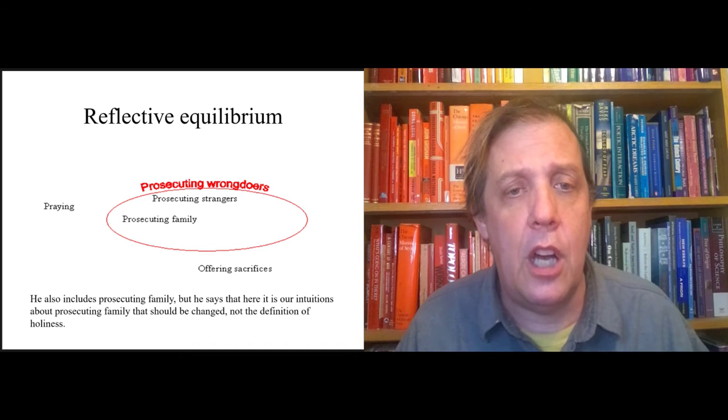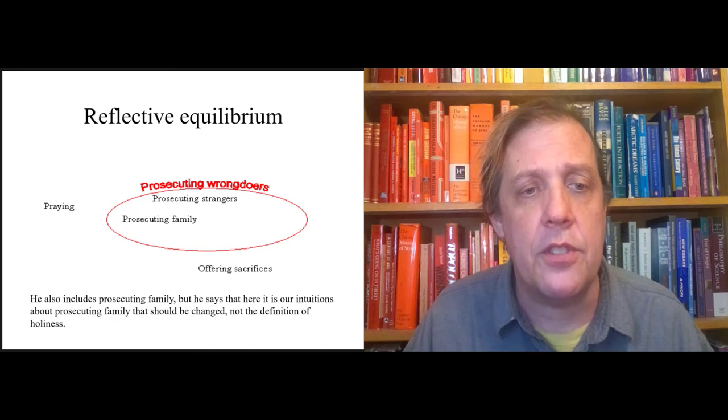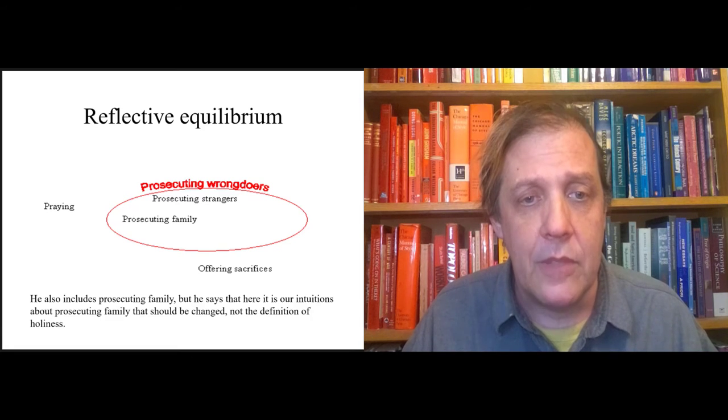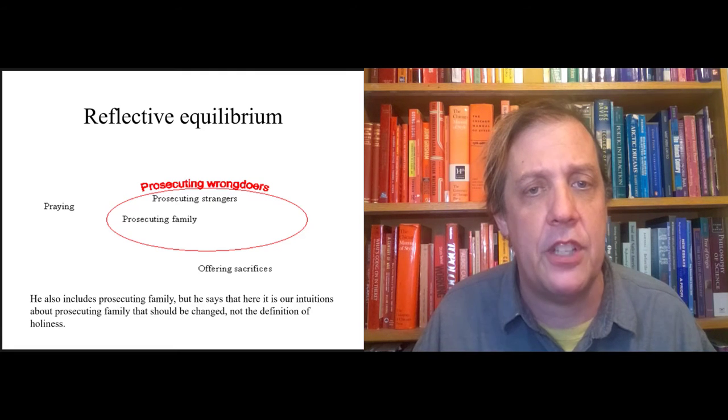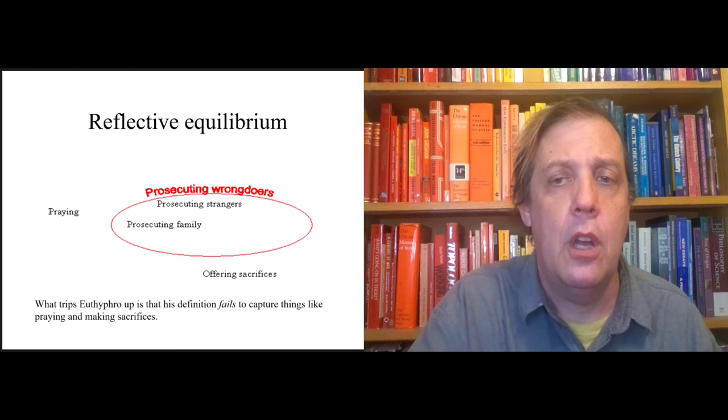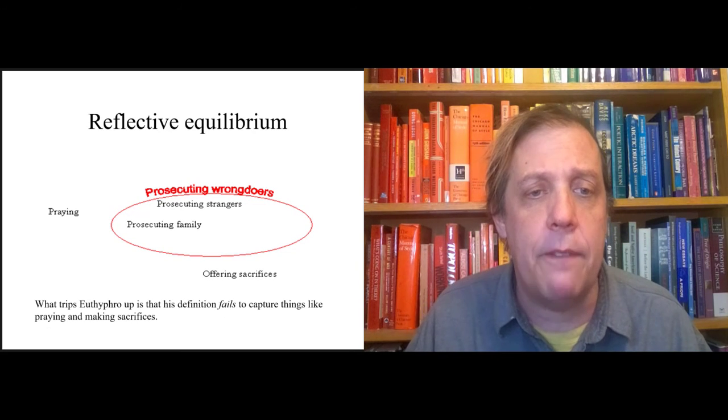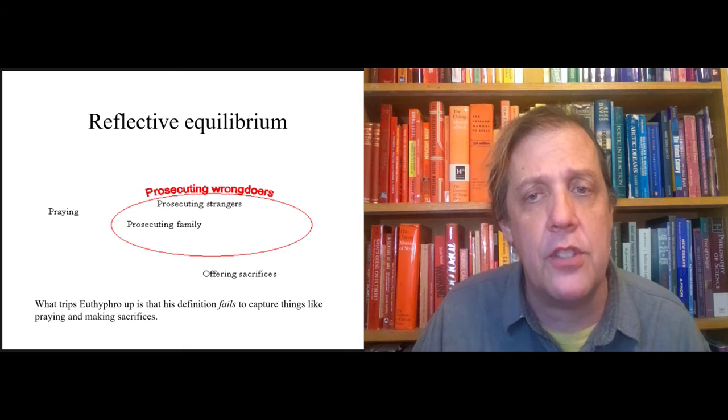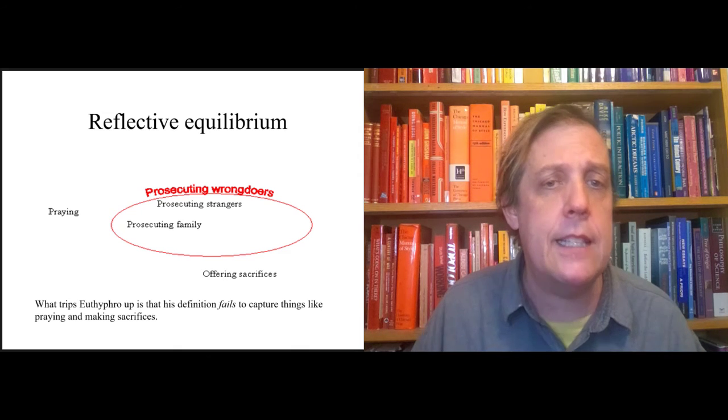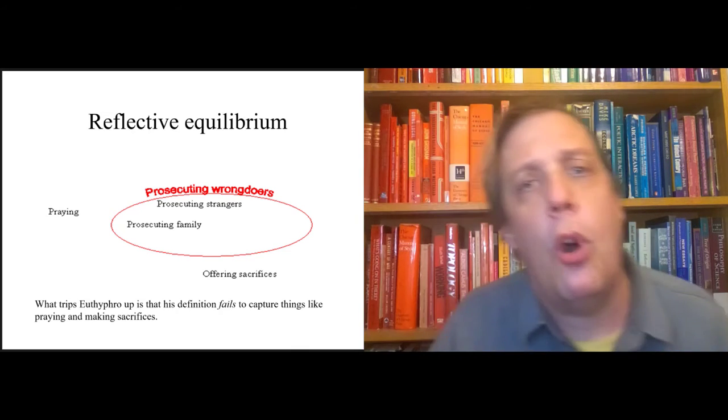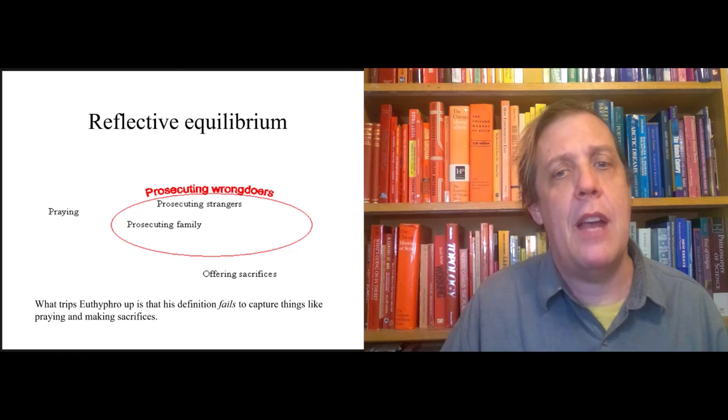Where Euthyphro messes up is that his definition fails to capture things. There are two things outside the circle - praying and offering sacrifices - that should be inside the circle. The whole game of reflective equilibrium is a matter of trying to draw a circle that captures the things you want and only the things you want.